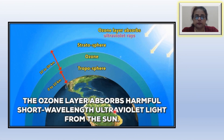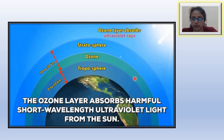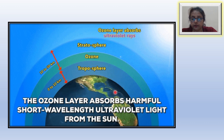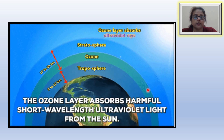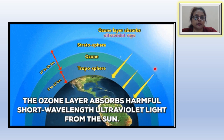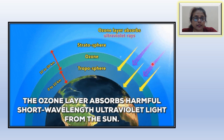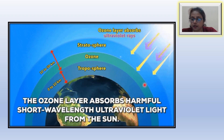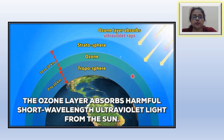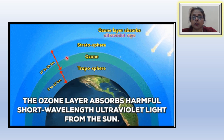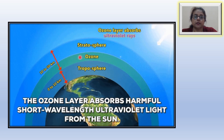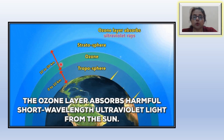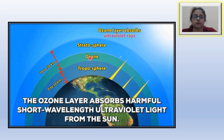The ozone layer absorbs the harmful ultraviolet rays of the sun which would otherwise severely harm all living beings on the earth. When the sun releases its light, the ultraviolet rays are absorbed by the ozone in the stratosphere. The maximum concentration of ozone gas is between 32 to 50 km from the surface of the earth, found in this particular part of the stratosphere.